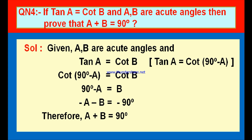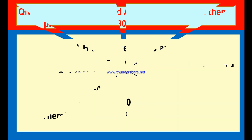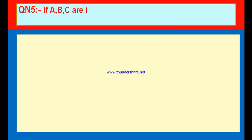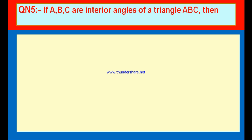Now let us see question number 5. If A, B, C are interior angles of a triangle ABC, then show that tan((A+B)/2) is equal to cot(C/2). If A, B, C are interior angles of a triangle ABC, then show that tan((A+B)/2) is equal to cot(C/2).